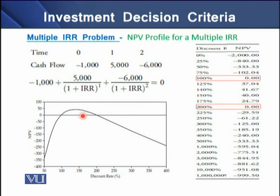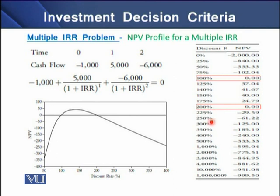Looking at the NPV profile for such a project, there is a first IRR at 100% and then a second IRR at 200%. From 0% to 100% the NPV is negative; at 100% it is 0; between the two IRRs, from 100% to 200%, the NPV is positive; and beyond the second IRR, NPV becomes negative again.